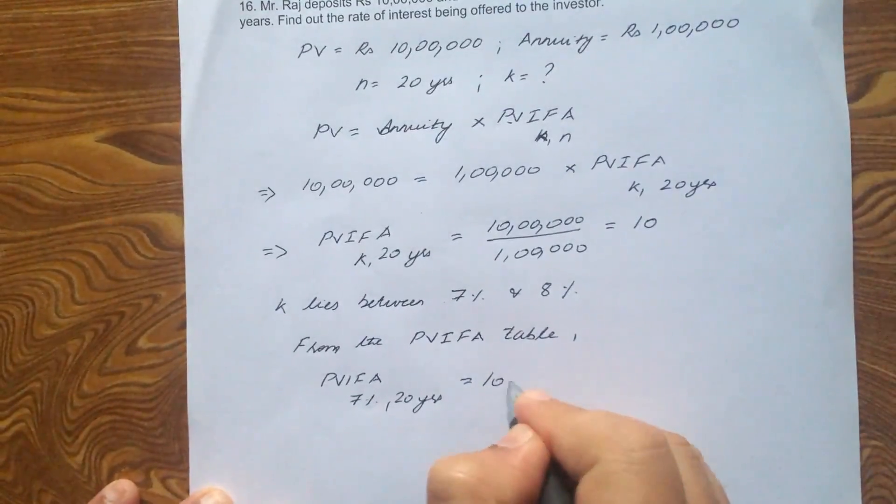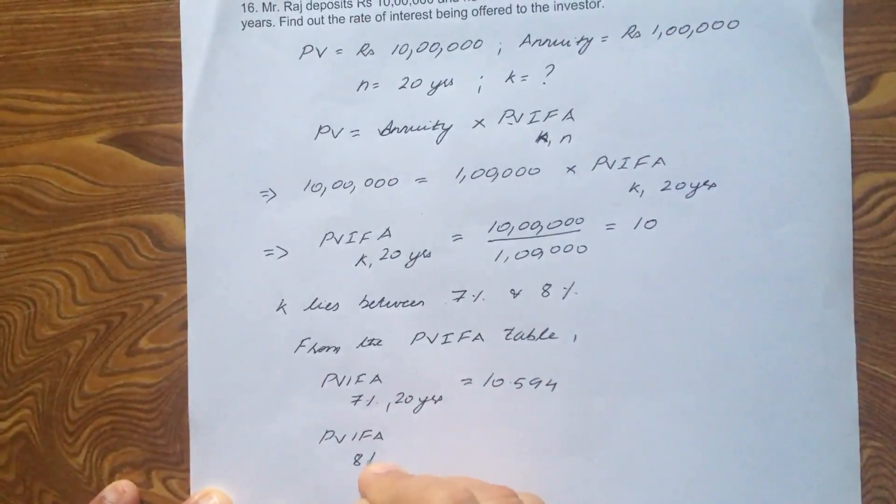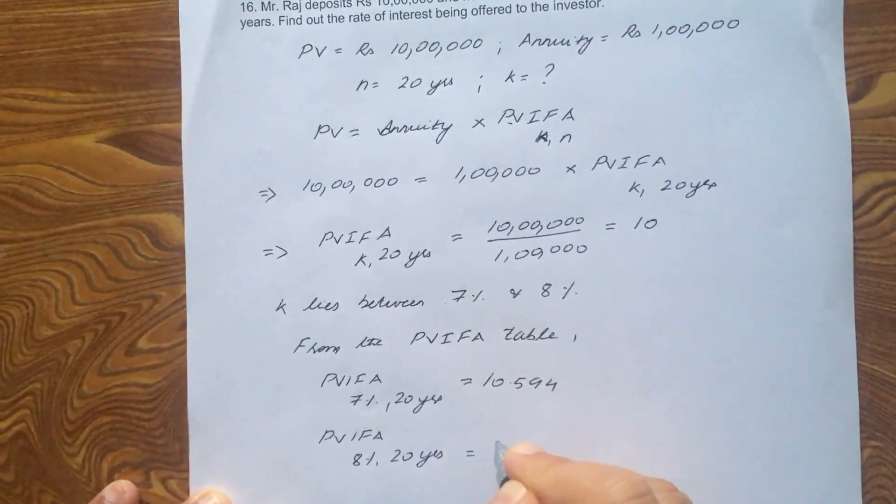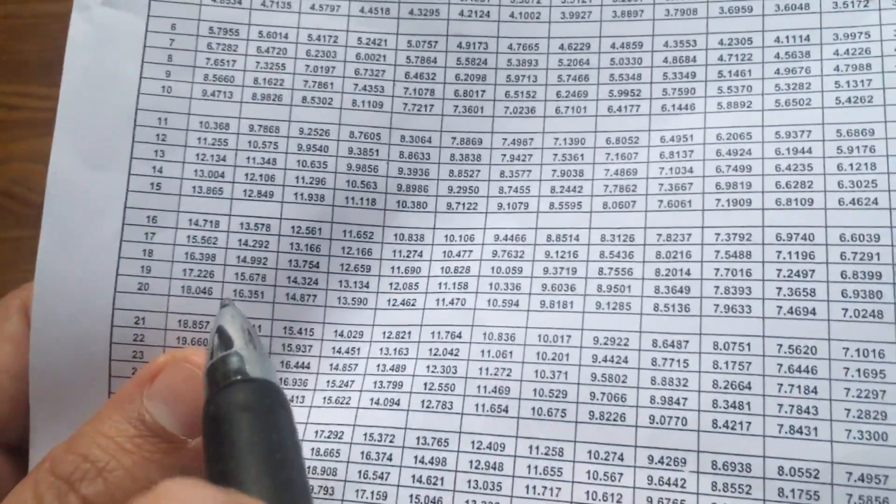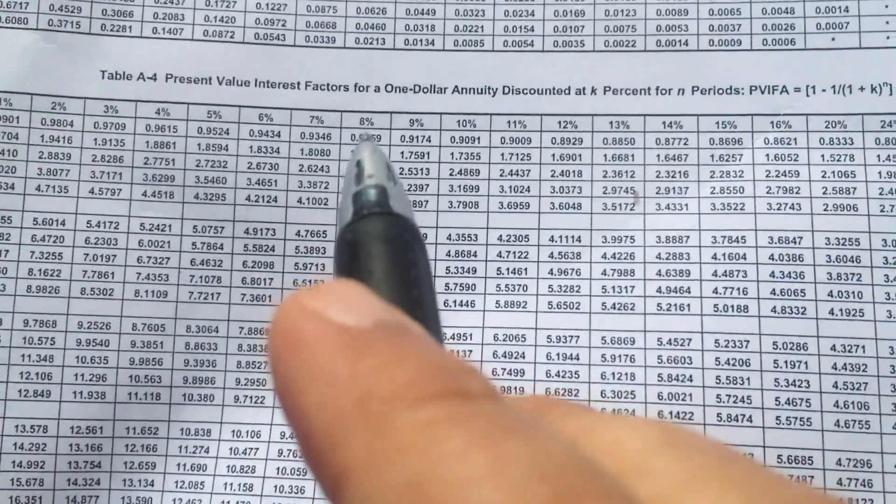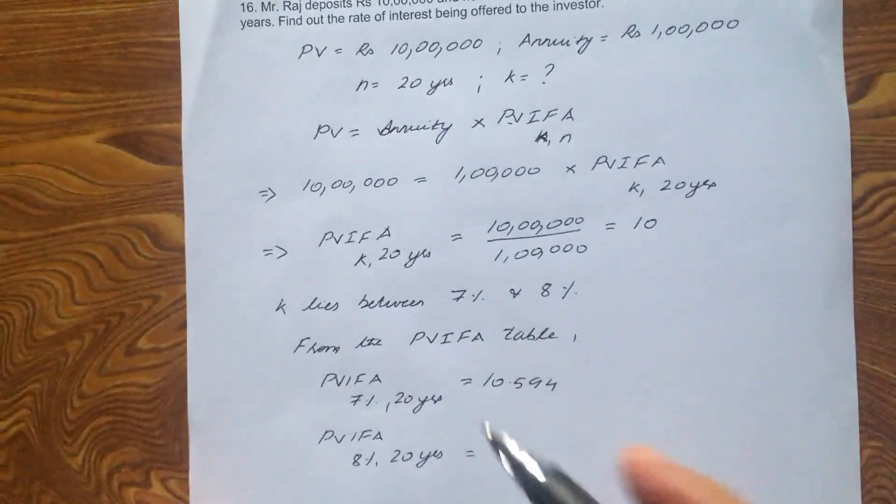10.594 and PVIFA 8% 20 years is equal to, corresponds to 8%. It is 9.818, 9.818.